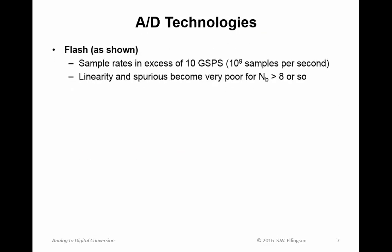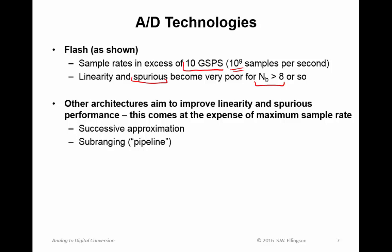Now A to D technologies. Flash ADCs are fairly common. Their big advantage is high sample rates in excess of 10 gigasamples per second, 10 billion samples per second in ADCs you can buy now. However, the trade-off is that linearity and spurious performance become poor especially as the number of bits gets greater than eight or so. It's very difficult to design those resistor trees such that intervals are very precise, and that degrades the accuracy of threshold decisions. Other architectures aim to improve linearity and spurious performance by trading off maximum sample rate. One is successive approximation, another is sub-ranging or pipeline architecture.